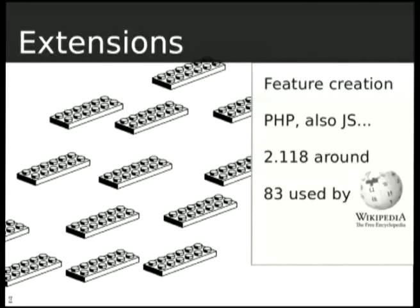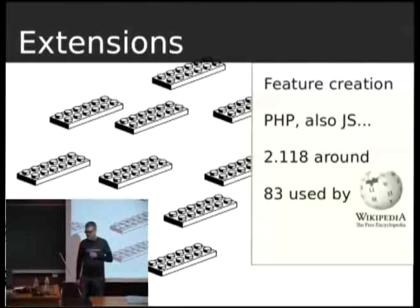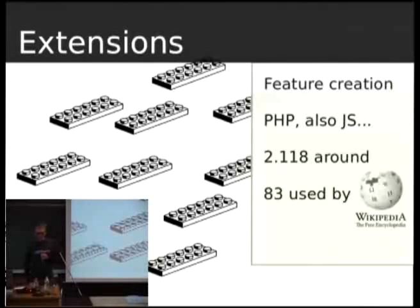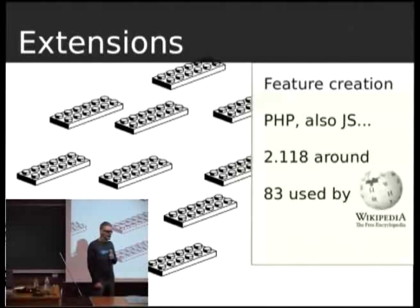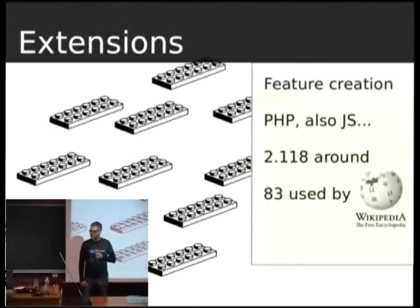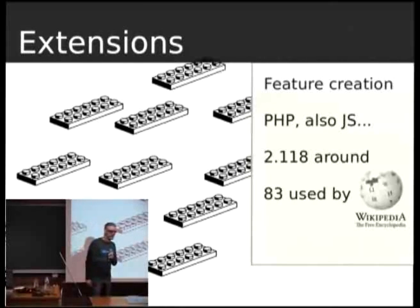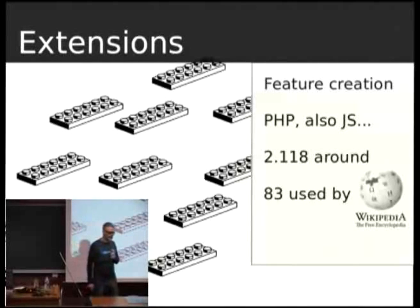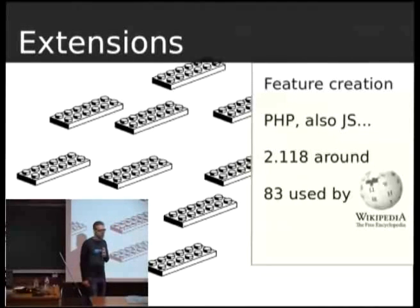Going down to extensions — actually plenty of functionality that you get as a user of Wikipedia comes from a specific extension. It can be a way to upload files, or many specific functionalities. These extensions are written in PHP mostly. You can start contributing to any of the many extensions that are around — 83 of them used in English Wikipedia, but there are plenty more used by other projects. Or maybe we are just missing something, and that something could be an extension that you could provide.